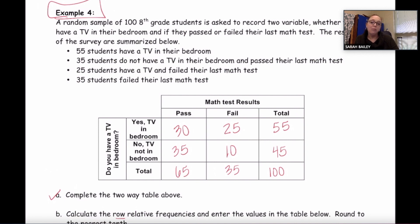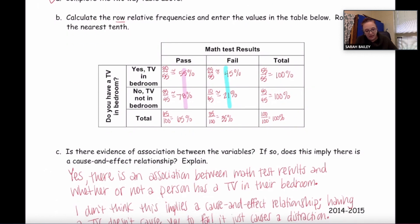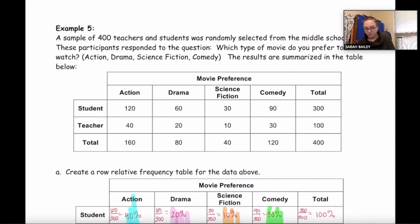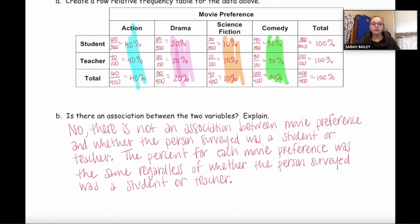Welcome back. Examples four and five required a bit more work — for example four you had to fill in the relative frequency table on your own based on the information given. Go ahead and pause the video to check over that. Here is the row relative frequency table, and then we look to see if there is evidence of an association. Pause and check your work. Example five's relative frequency table was already filled in — pause the video and check over parts a and b.